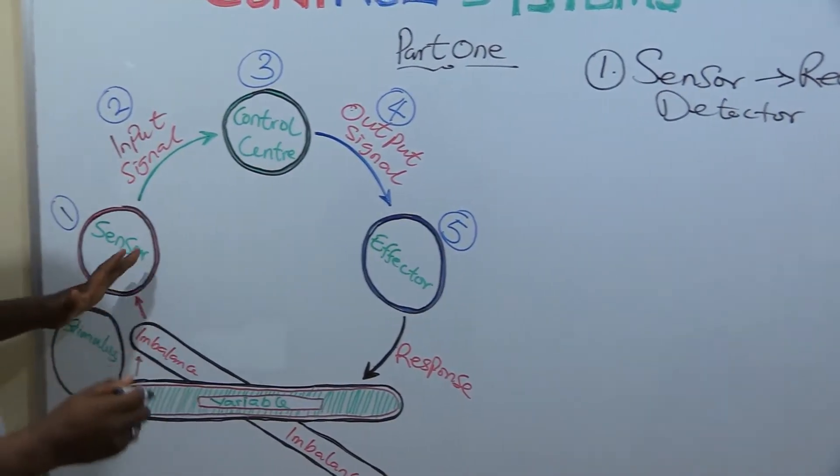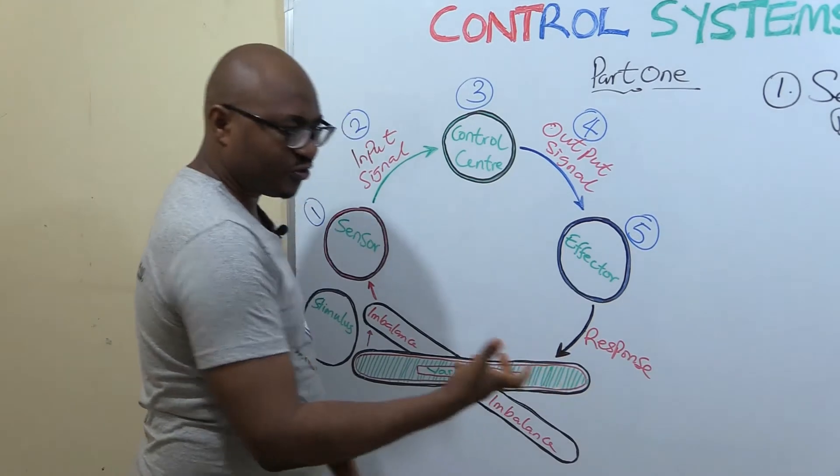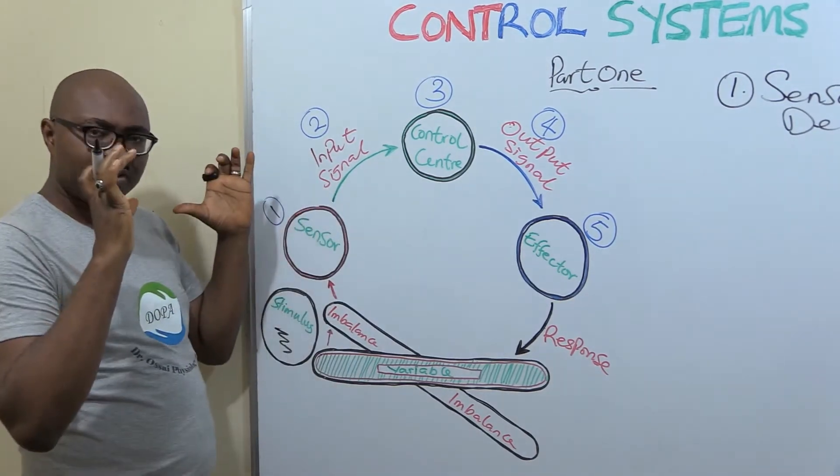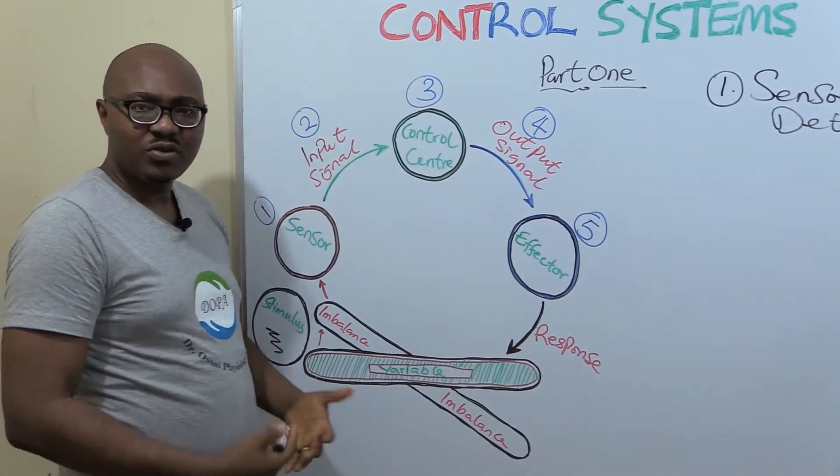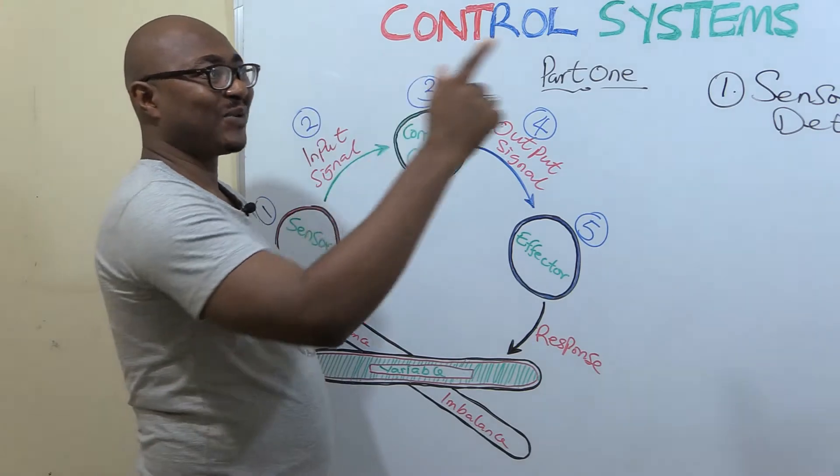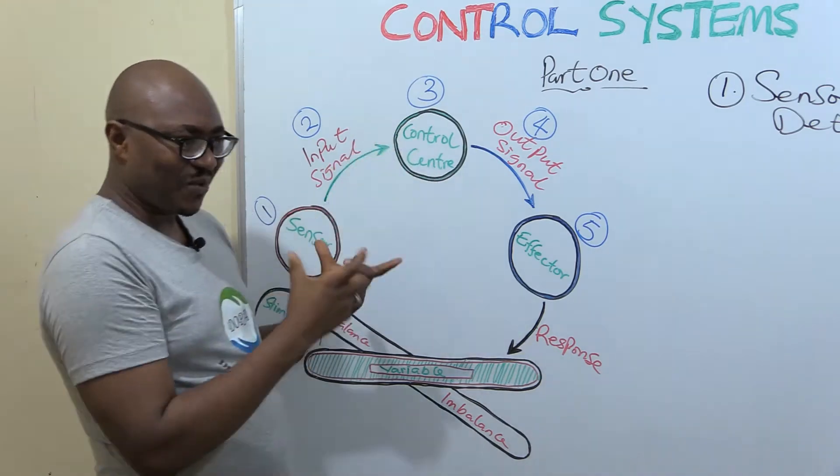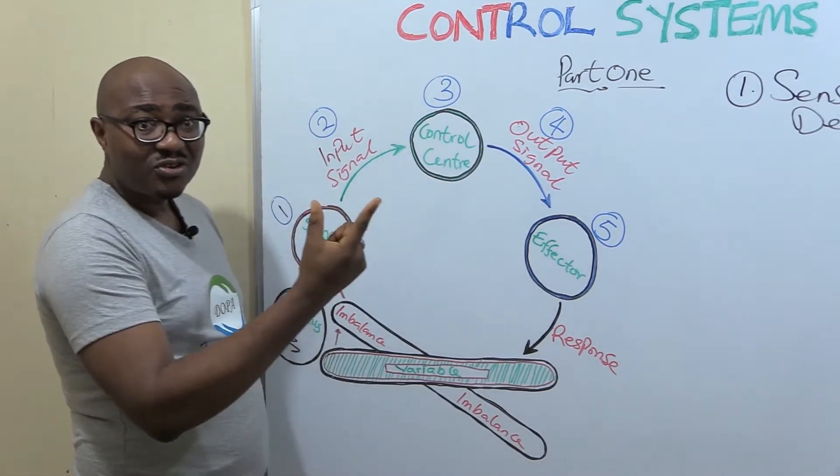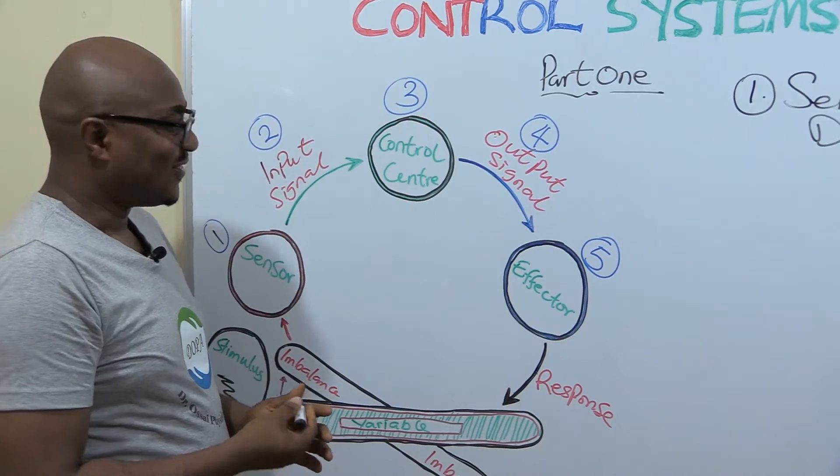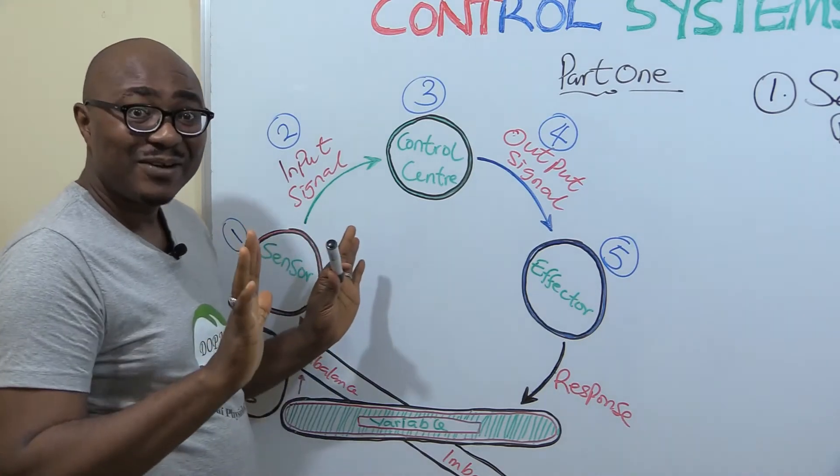The stimulus is what causes the change - the stimulus introduces and brings about that change, and then imbalance. Then the sensor detects, 'Oh, there's a change.' When it has detected, what do you think should be the next thing it will do? It reports to another part of this system and says something has gone wrong. It's reporting to the control center. But what does it use to report? The reporting is talking about communication. Remember,